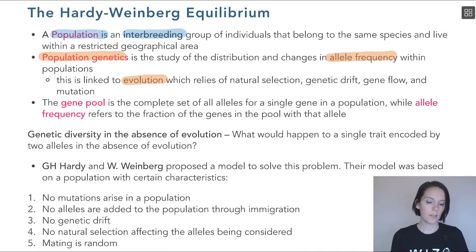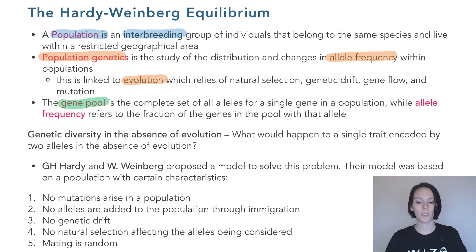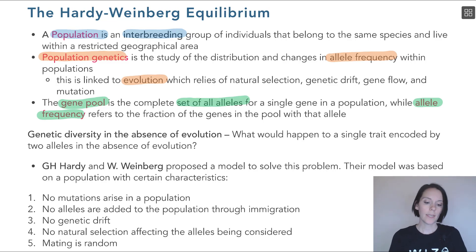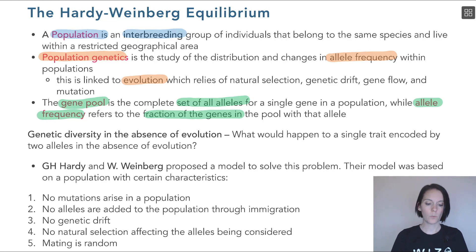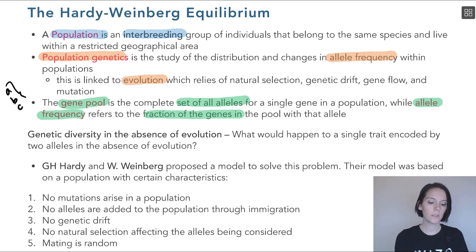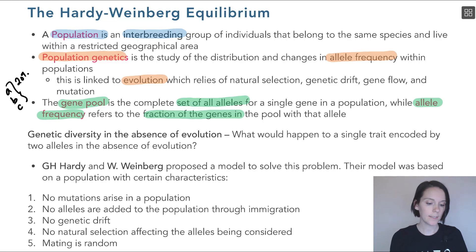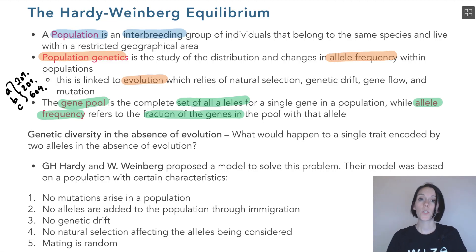In a population, the gene pool refers to the complete set of alleles available in that population — the complete set of all alleles for a gene. Allele frequency refers to the fraction of genes with a particular allele. For example, for a gene with three alleles — A, B, and C — that represents the gene pool. The allele frequencies might be 20% for A, 20% for B, and 60% for C.